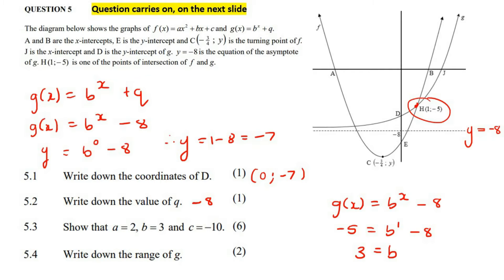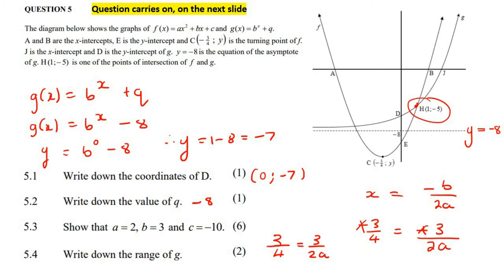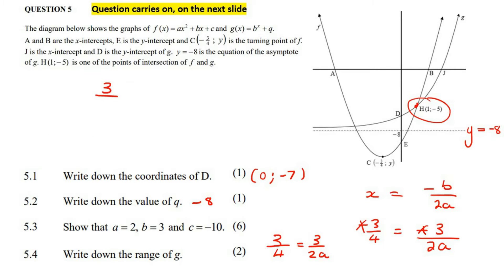Now, they tell us the x value of the turning point is minus 3 over 4. We normally find the x value of a turning point using minus b over 2a. We know the x value is minus 3 over 4 and b is 3, so we can solve for a. Getting rid of the negatives on both sides, we have 3 over 4 equals 3 over 2a. Using cross multiplication, 6a equals 12, so a equals 2.